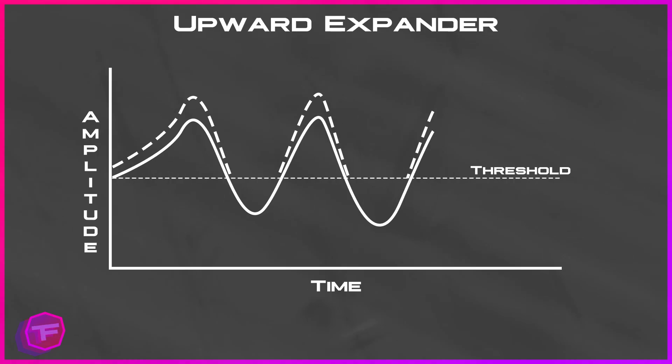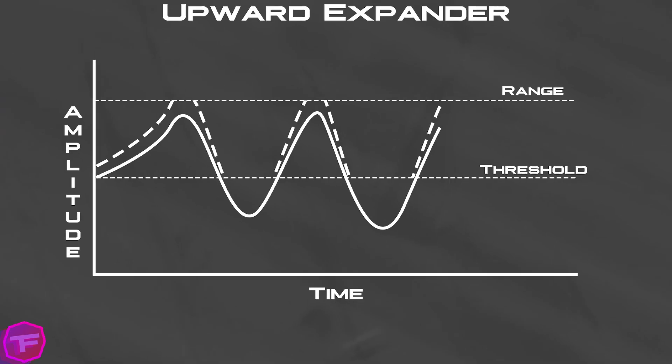An upward expander is often used to emphasize the peaks of an audio signal — it increases the audio signal for everything above the threshold you set. Upward expansion is useful for adding excitement and attack to highly dynamic sound sources. In music mixing, it's commonly used for drums, percussion, synths, guitars, piano, and vocals. The expansion applies a boost based on the ratio you've set, and will not exceed the range limit you've also applied.